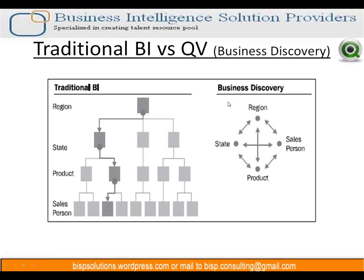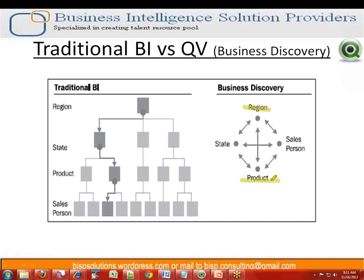But in a business discovery tool like ClickView it is totally different. You can select region, then directly select products irrespective of which states they have been sold in. When you select all the products in that region, all the associated states where those products have been sold will be highlighted. You can also go directly from region to see all the salesperson information making sales in that region, irrespective of product or state. You can look at a region and salesperson combination and directly see which state that salesperson has sales in, and what products they are selling. It's the way our mind works — you can select any combination without being restricted to a traditional BI path.